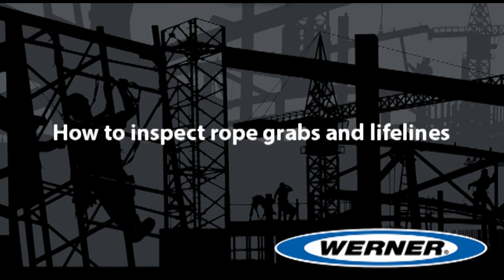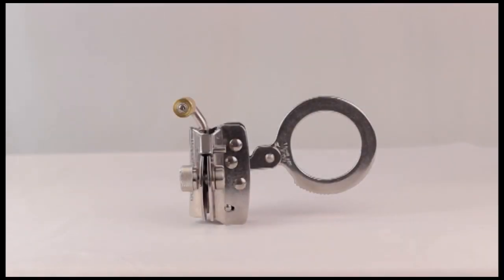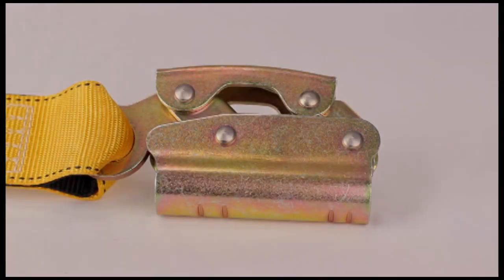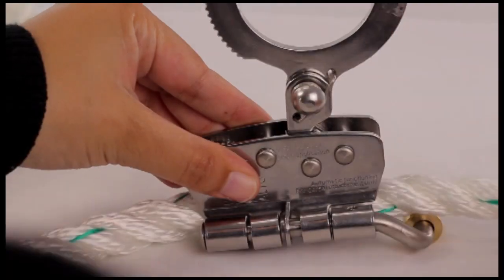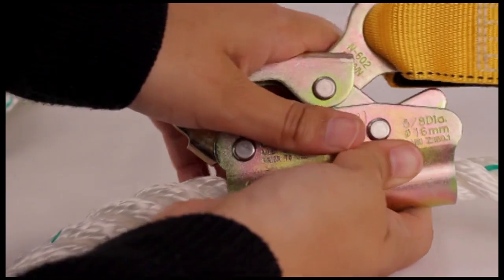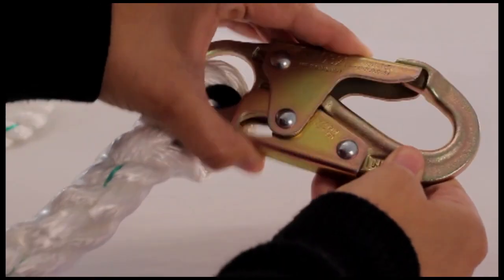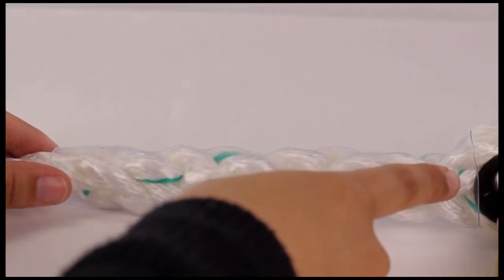This video demonstrates the proper inspection of the Werner Trailing Rope Grab and the Werner Manual Rope Grab. Users must perform an inspection of the rope grab and its components before each use. Failure to do so may result in injury or death.